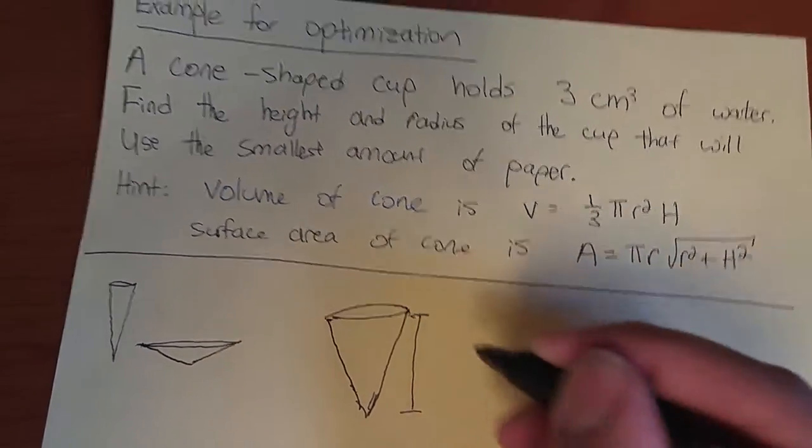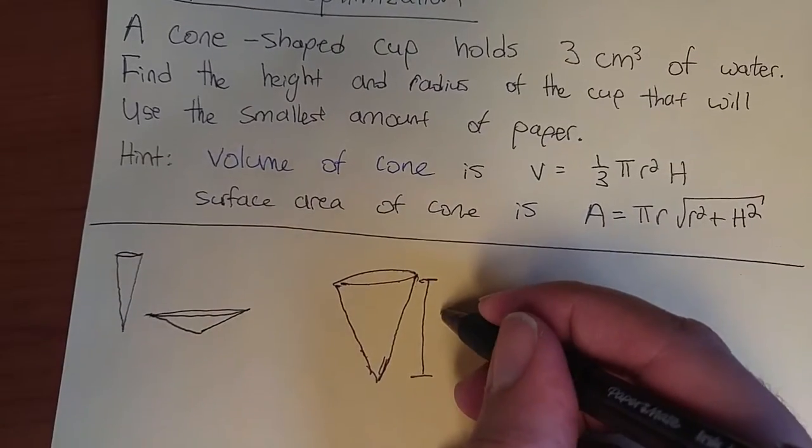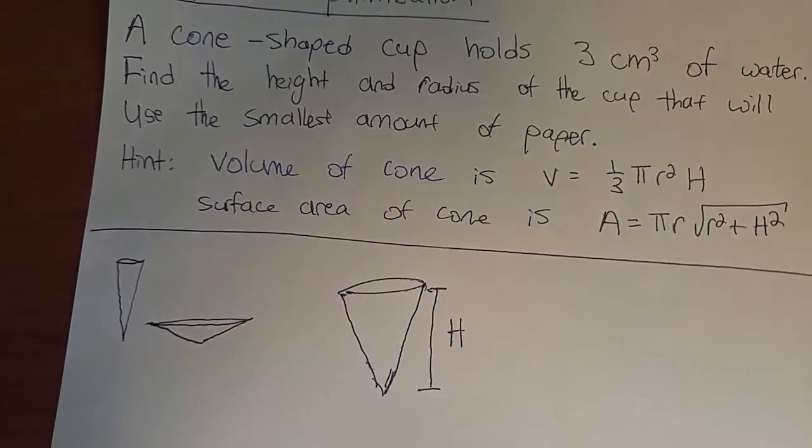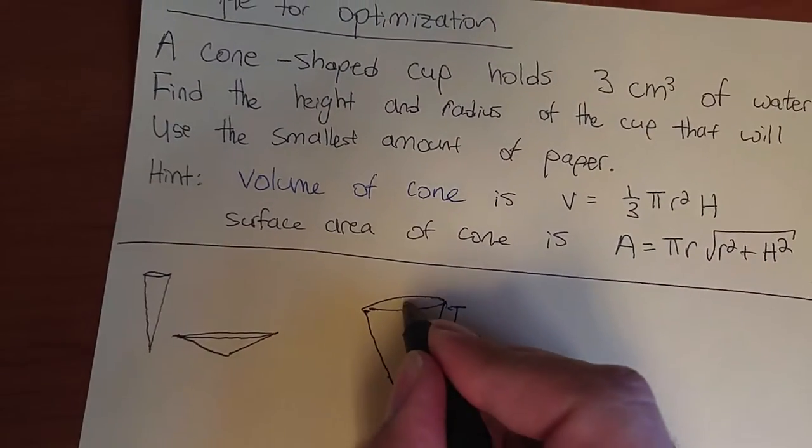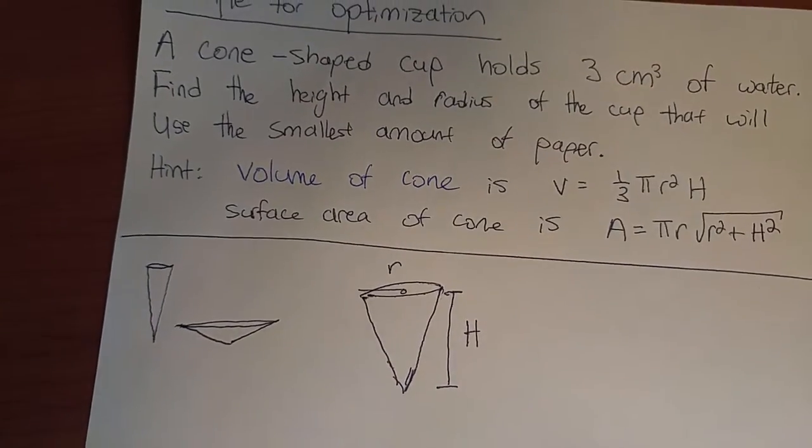The information that's given, or the formulas that are given, correspond to h being the height of the cone, and r being this radius at the top of the cone there.